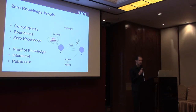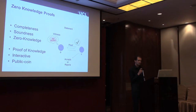Our zero-knowledge protocols will have three more properties. They'll be proofs of knowledge, meaning the prover actually has to know a secret witness in order to convince the verifier to accept. They'll be interactive protocols, so the prover and verifier will exchange several messages. And they'll be public coin protocols, meaning all of the verifier's messages are chosen uniformly at random from some set.